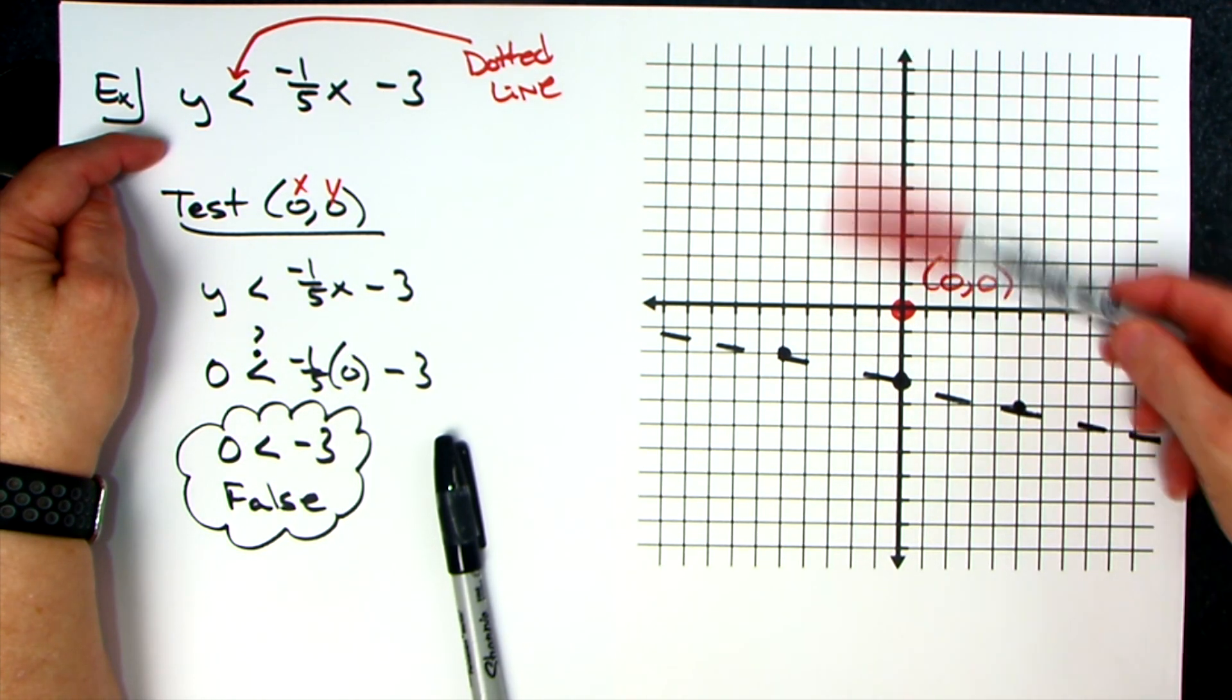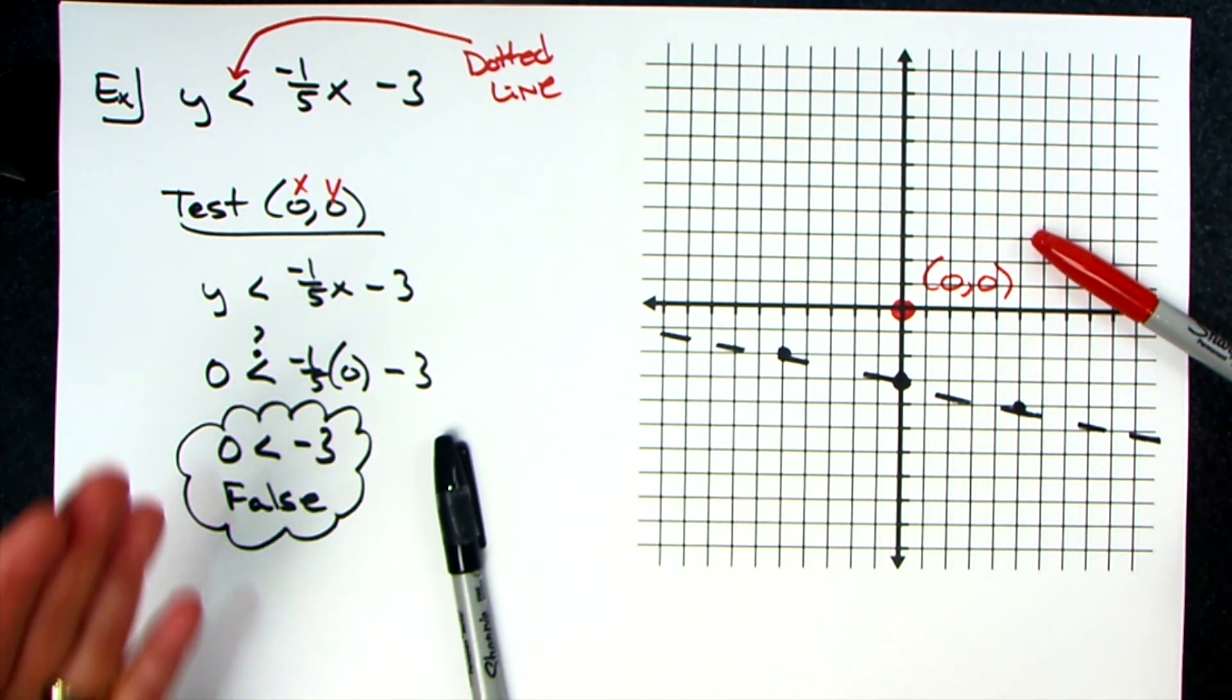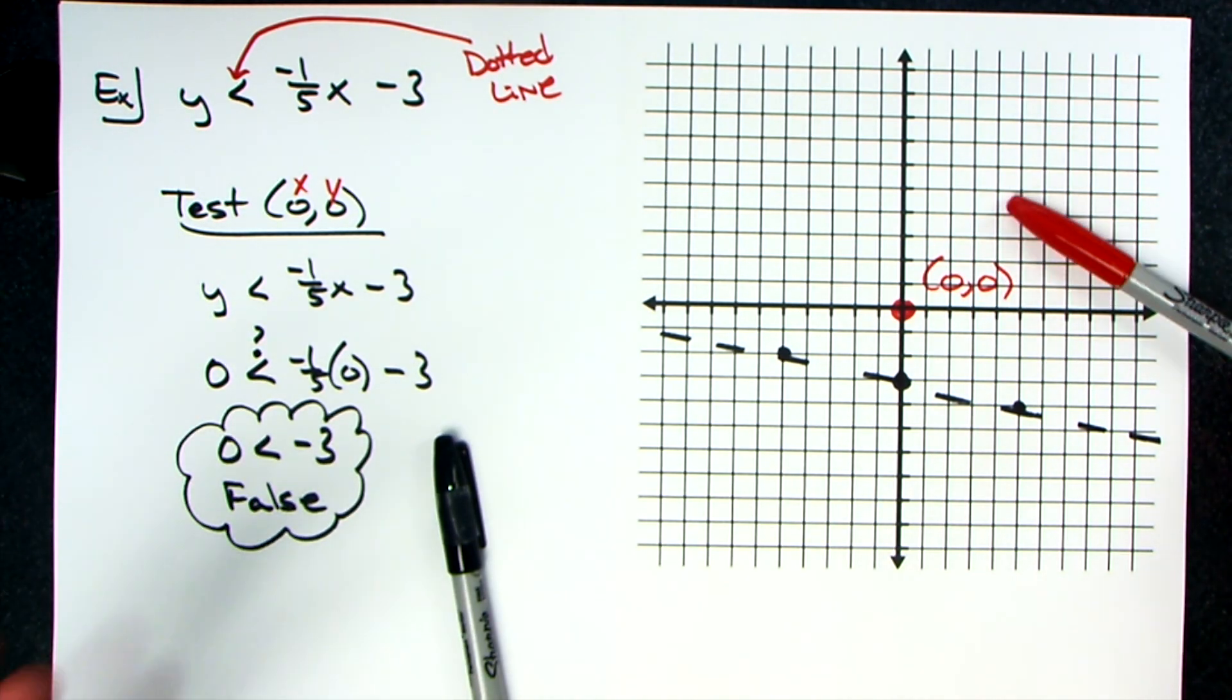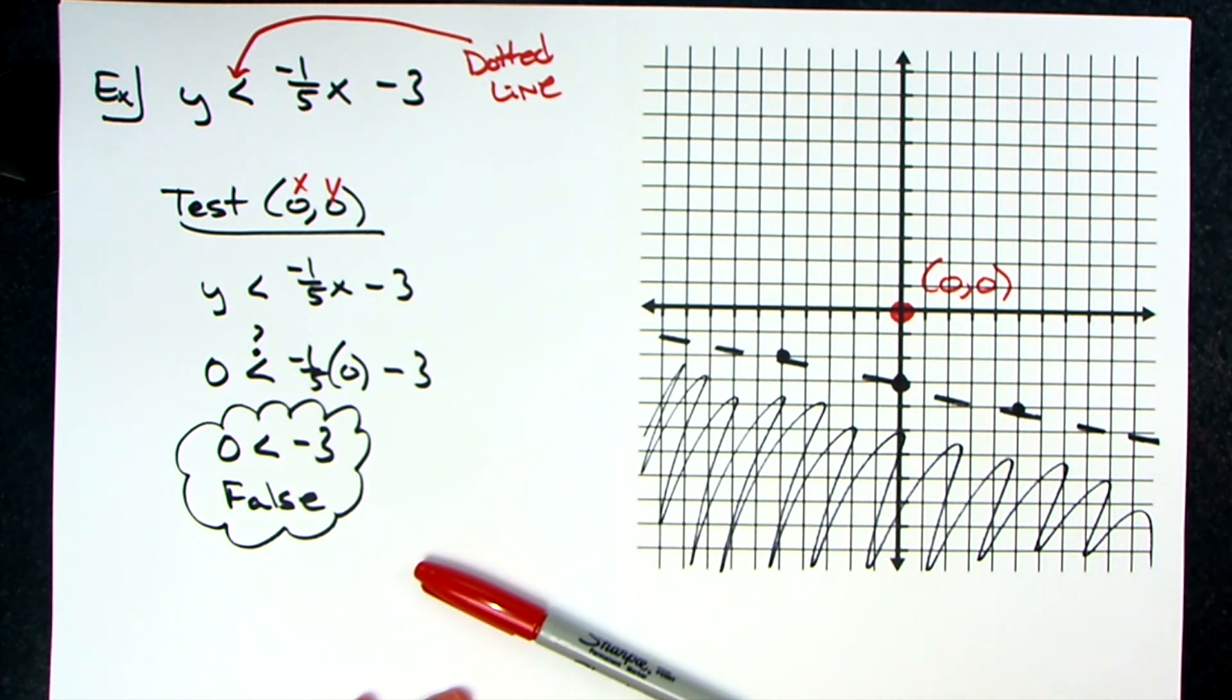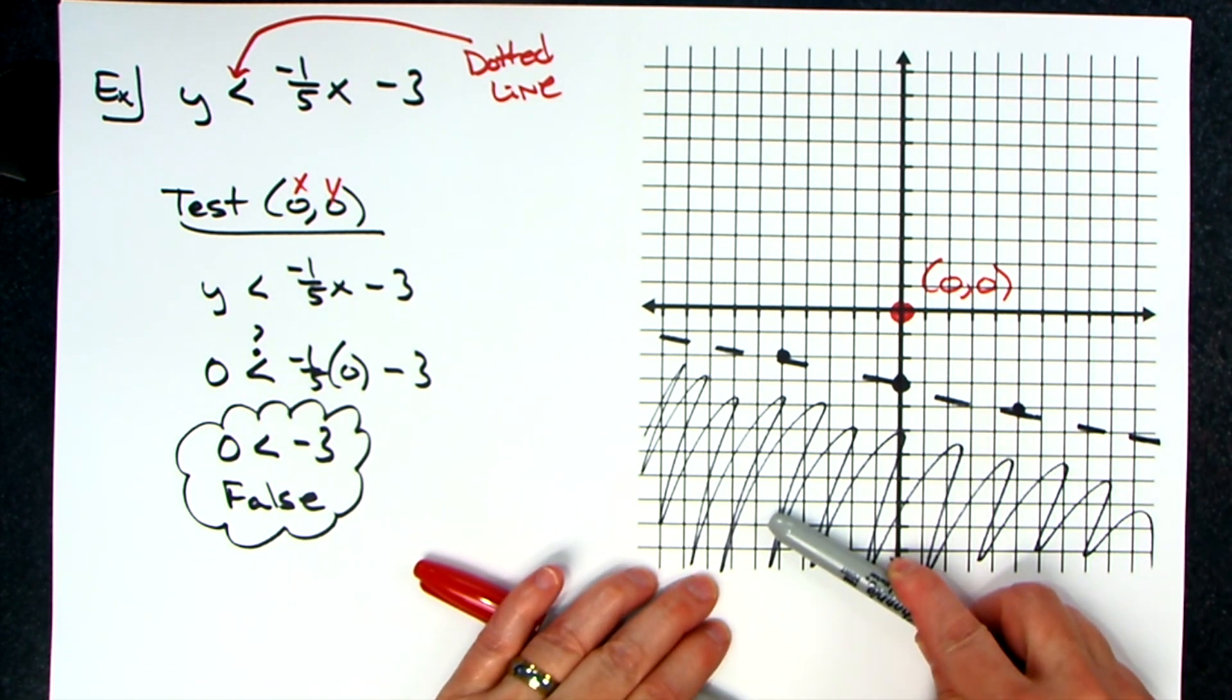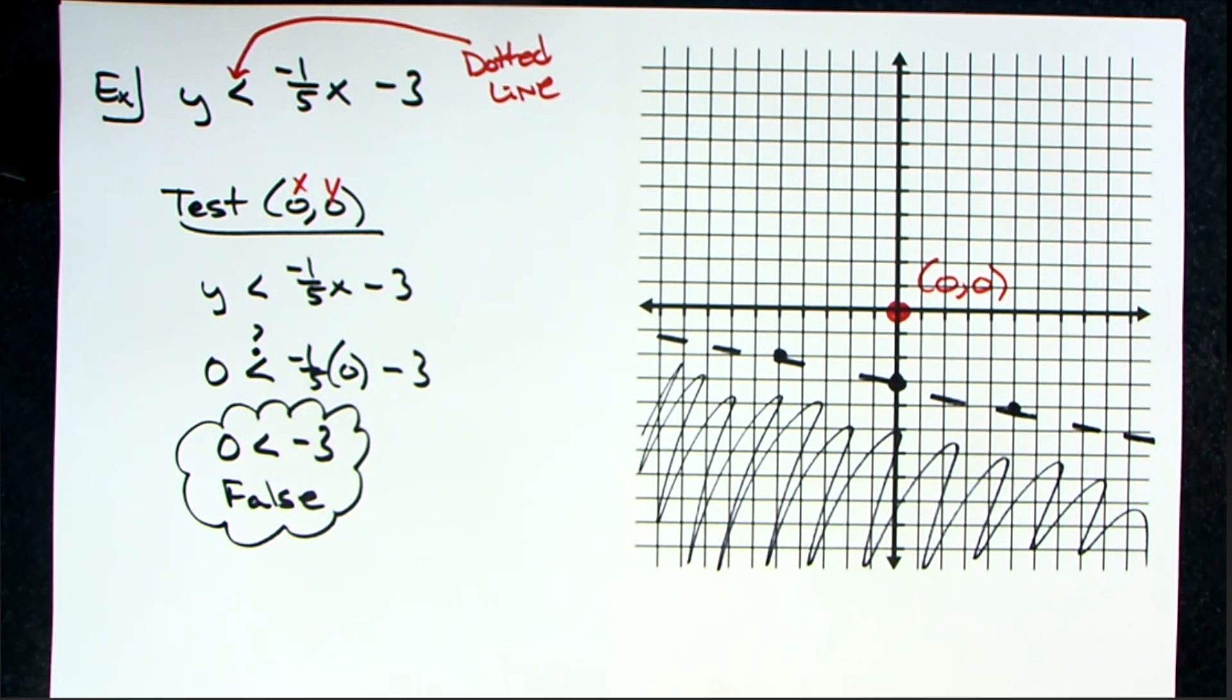So I want to shade - we're shading the solutions - so I want to shade where they are making it true. That means these points over here are the ones that have to make it true. So when it's false, you shade on the opposite side of where you have the line.